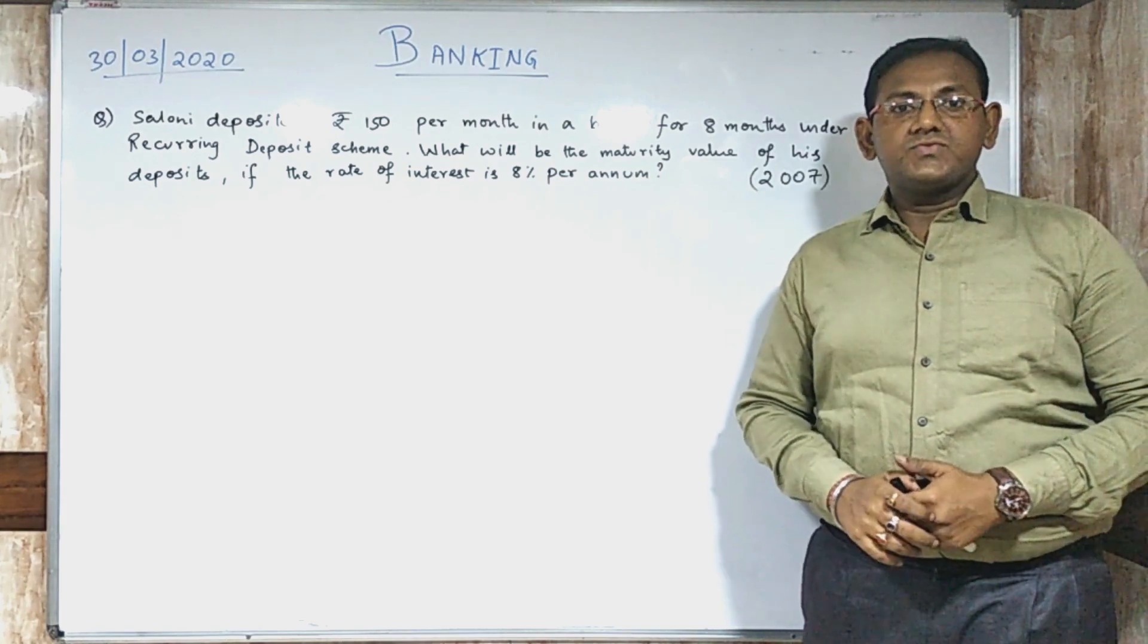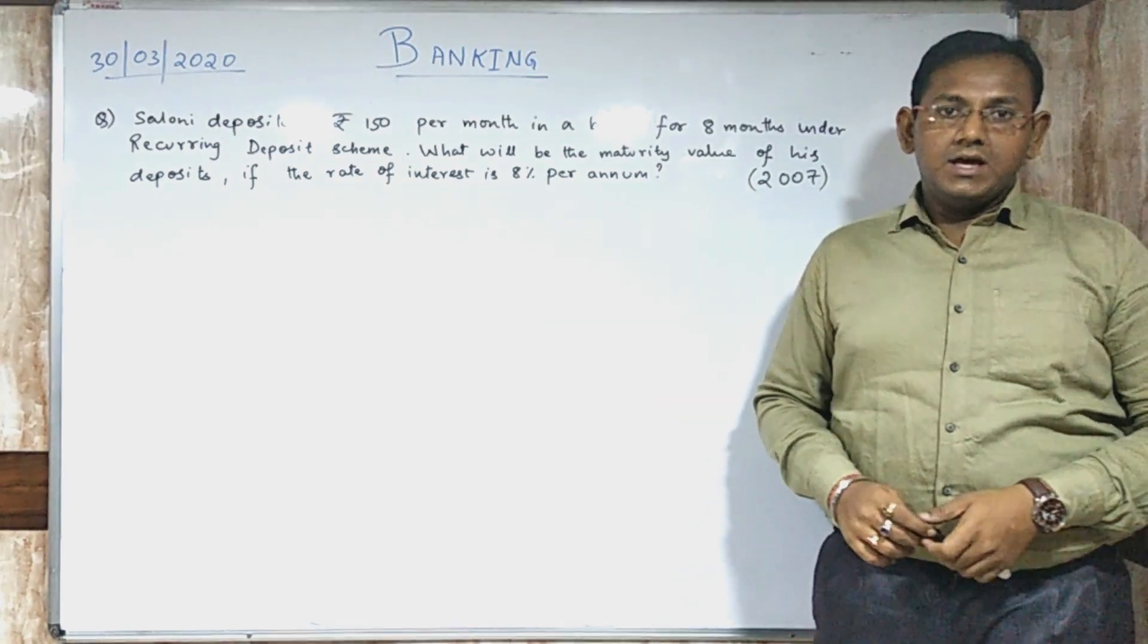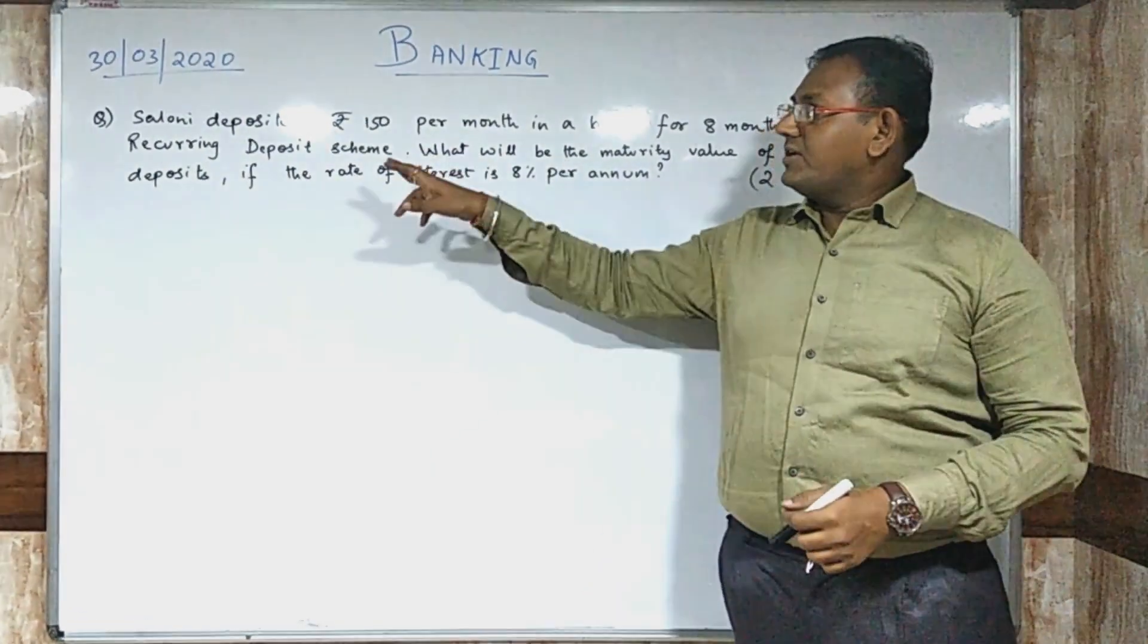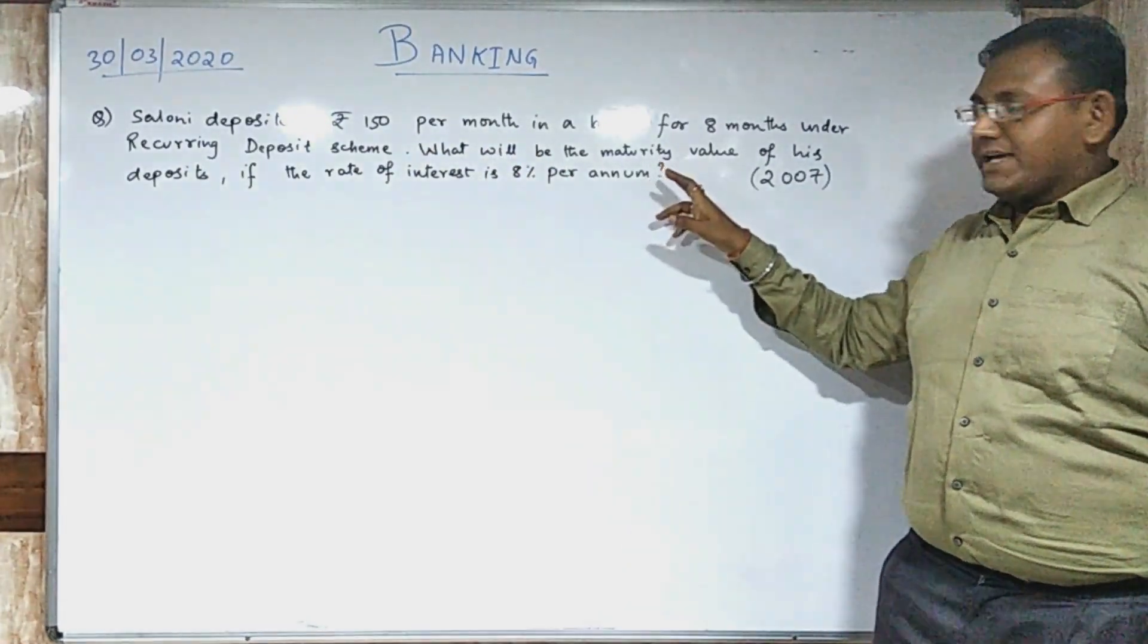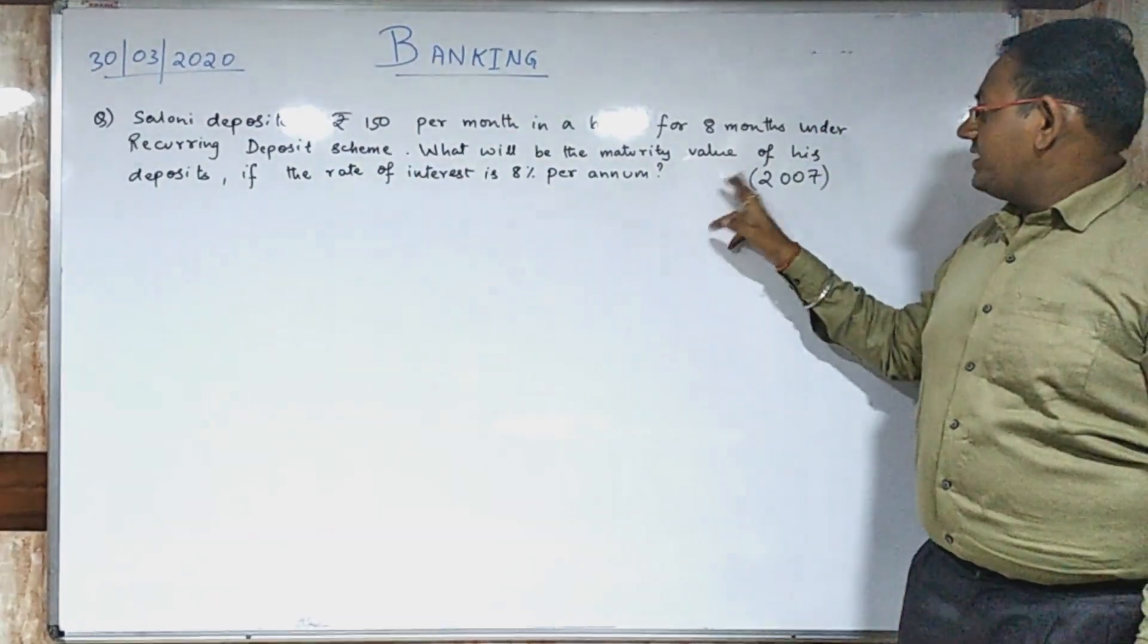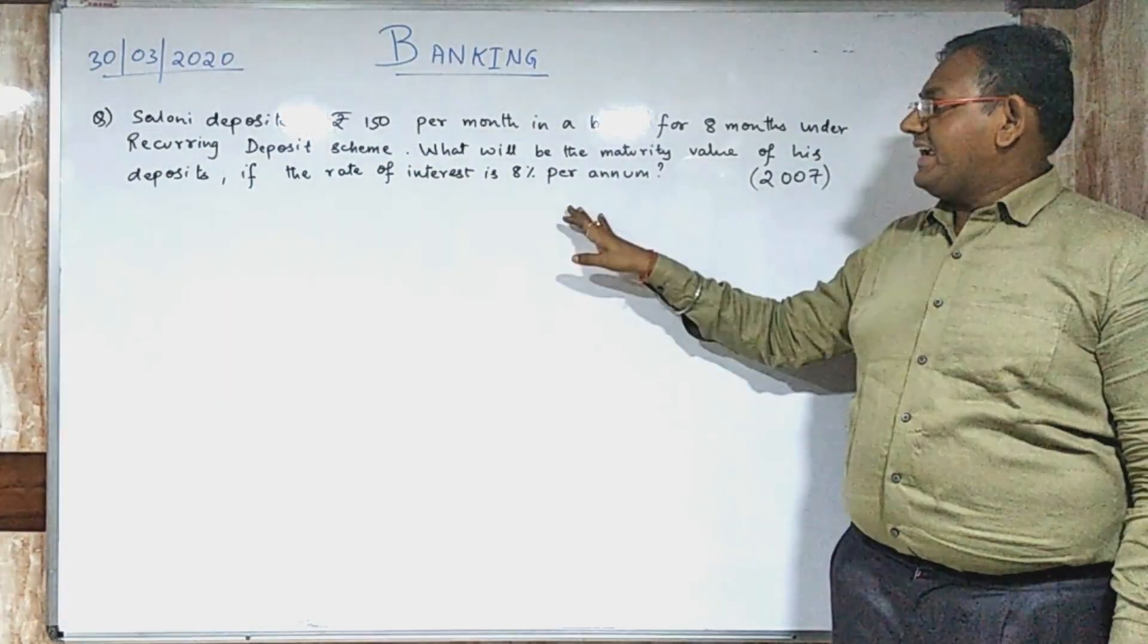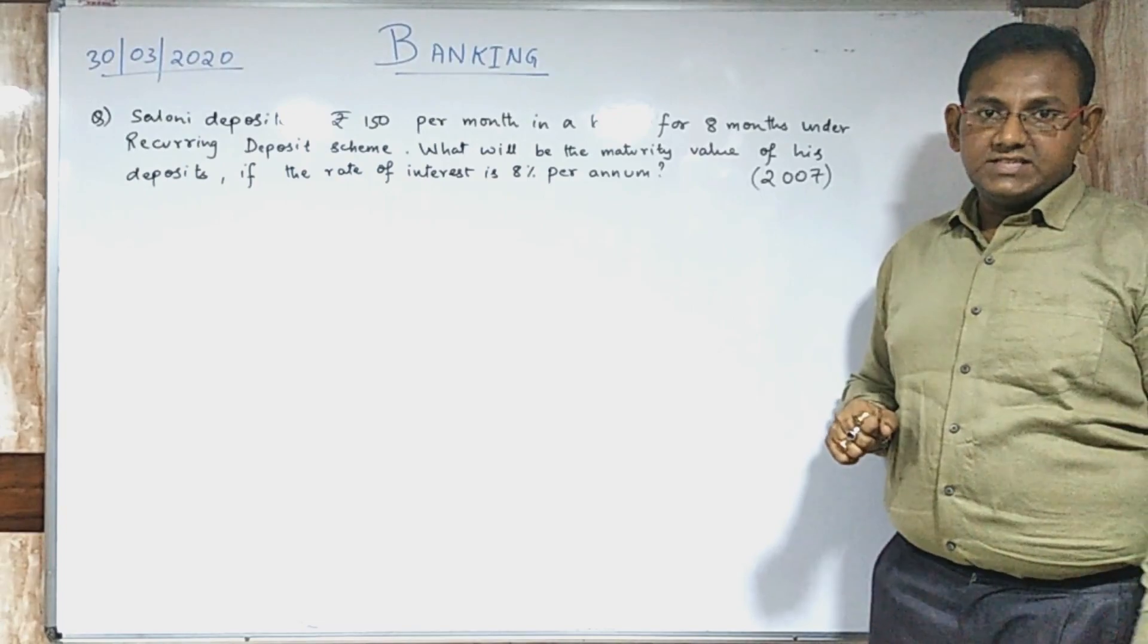Let us discuss examples on the basis of Retiring Deposit account. There is a question given: Saluni deposited Rs. 150 per month in a bank for 8 months under Retiring Deposit scheme. What will be the maturity value of his deposit if the rate of interest is 8% per annum? This question came in 2007.